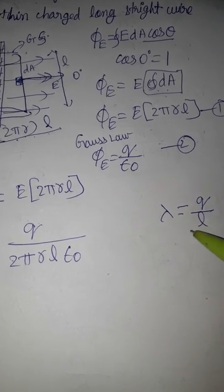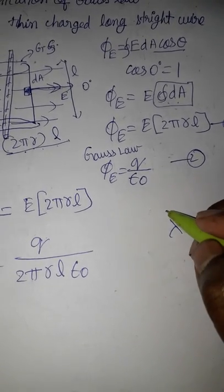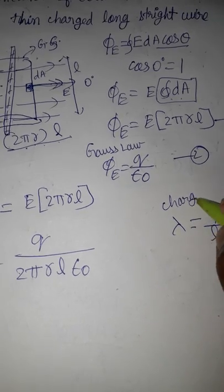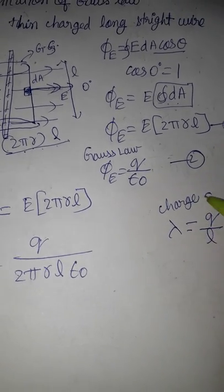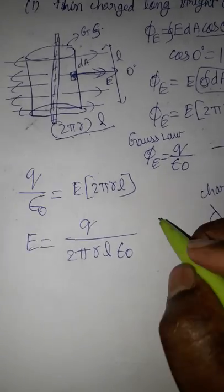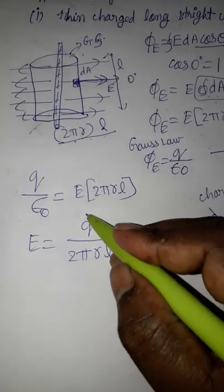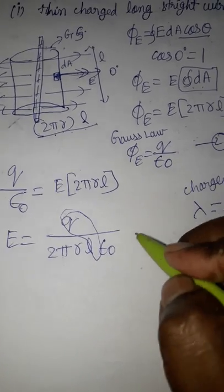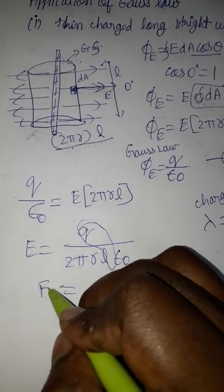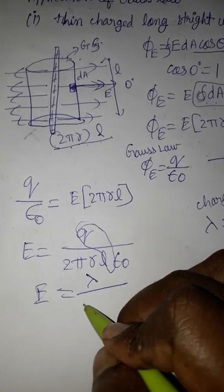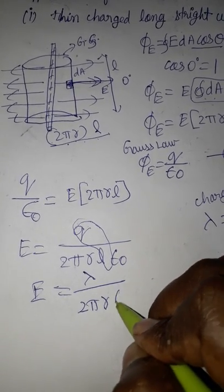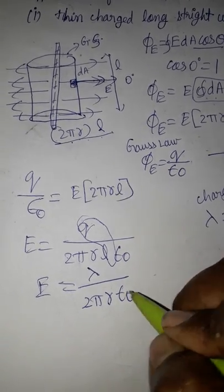Lambda is the linear charge density, which is charge per unit length, meaning lambda equals q divided by l. Substituting, the electric field E equals lambda divided by 2πr times epsilon naught.